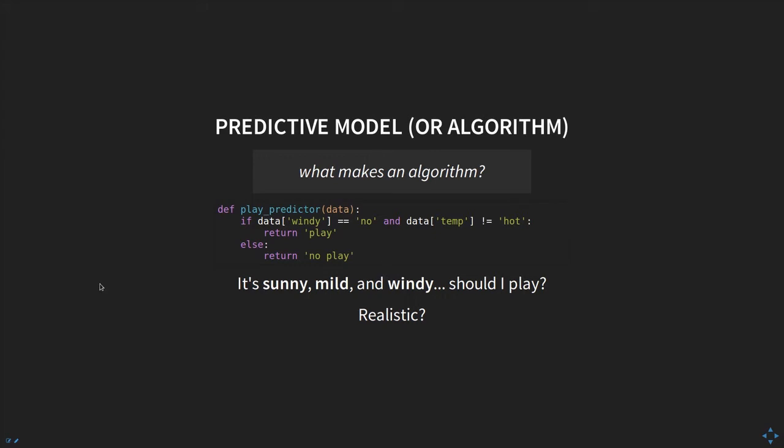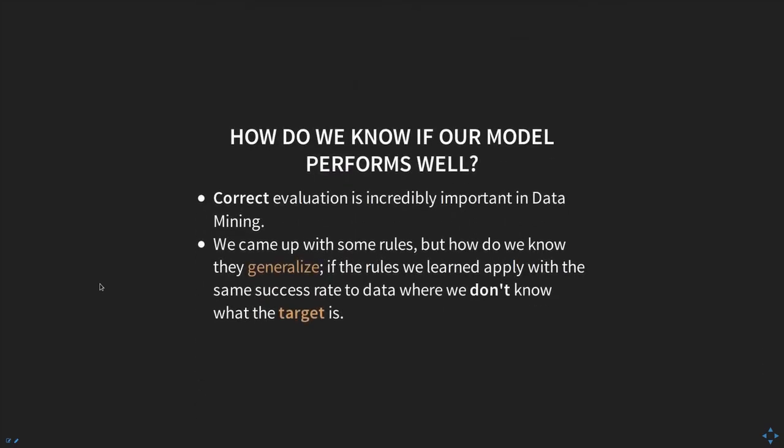In realistic cases, it's super important to evaluate how models perform — whether they're rules or other algorithms — and if they perform well on new data. It's crucial to know if our predictions are accurate, and whether we didn't just fit a model to our training data that won't generalize to new data. We didn't account for generalizability: we made rules that specifically capture the training data without considering that we might get new data where we don't know the target value.